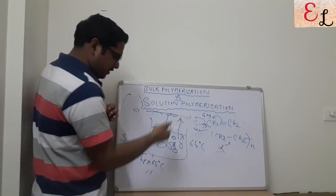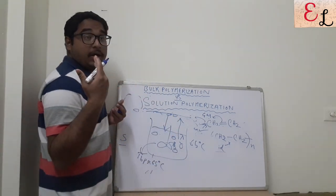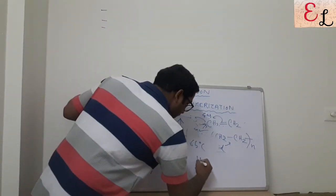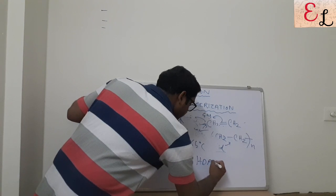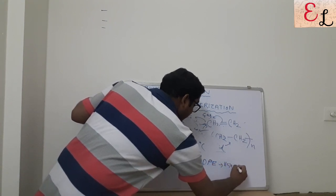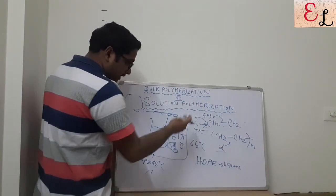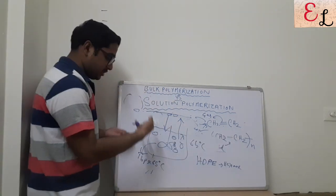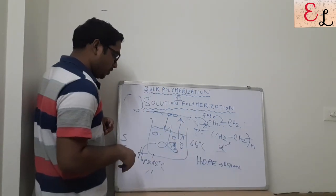This is the prime beauty of solution polymerization — the solution must be chosen with a boiling point equal to the favorable temperature of polymerization. For example, in HDPE (high density polyethylene) production, which uses a solution polymerization process, hexane is used as the liquid of the solution, as hexane has a favorable boiling point matching the requirement of the process.